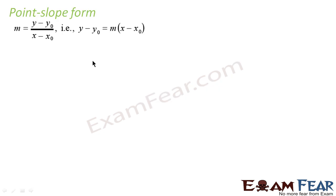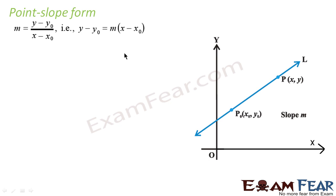Now let's discuss point-slope form. If we have the slope known — 3, 4, 5, 6, whatever the value is known to us — then we can find the equation. We should also know at least one point; for example, we know the value of point P, that is x0 and y0. Then we can write the equation in this form: y minus y0 is equal to m into x minus x0.